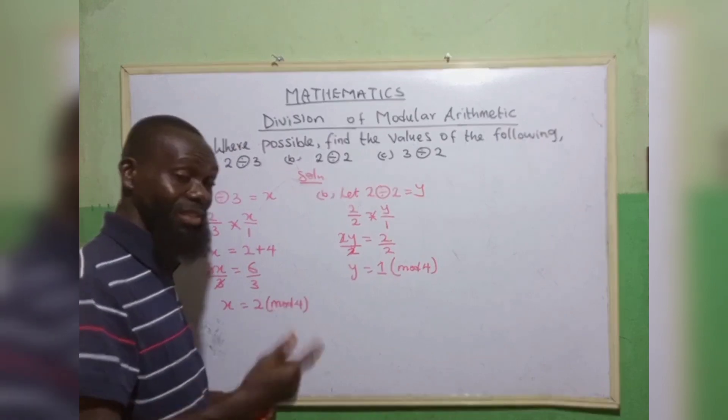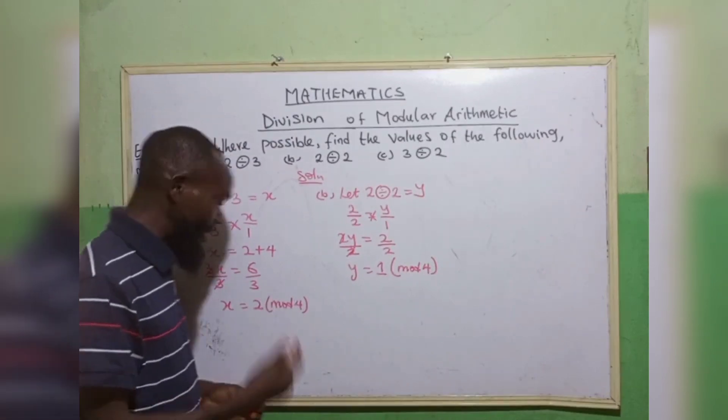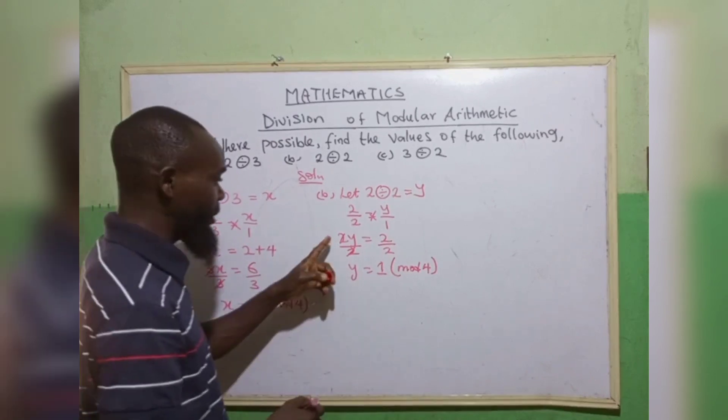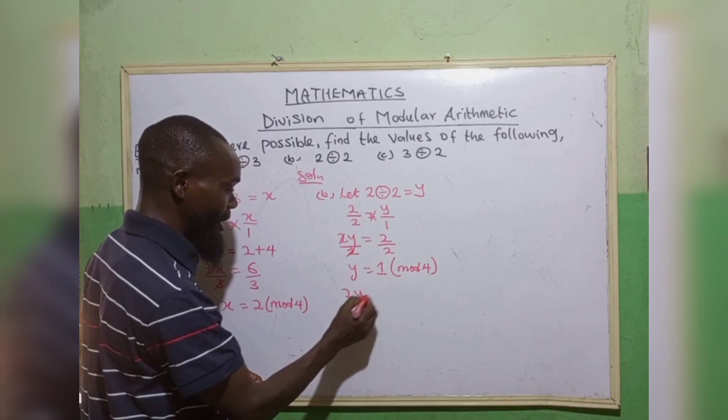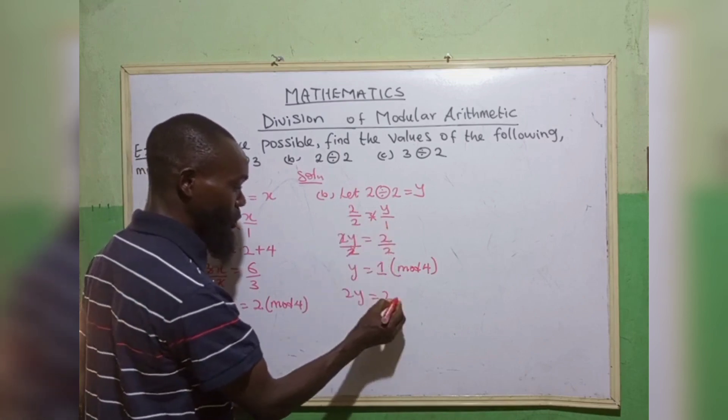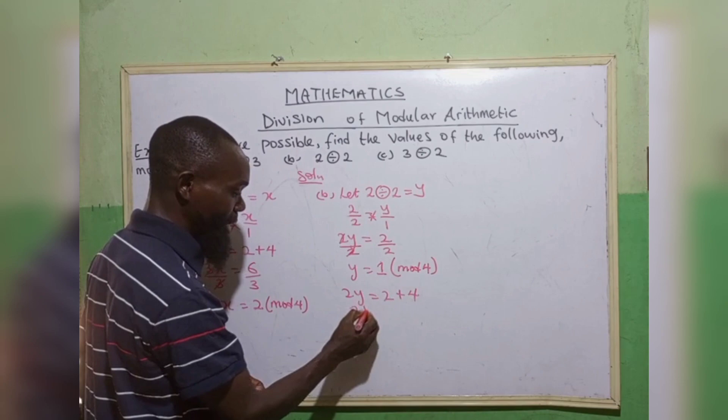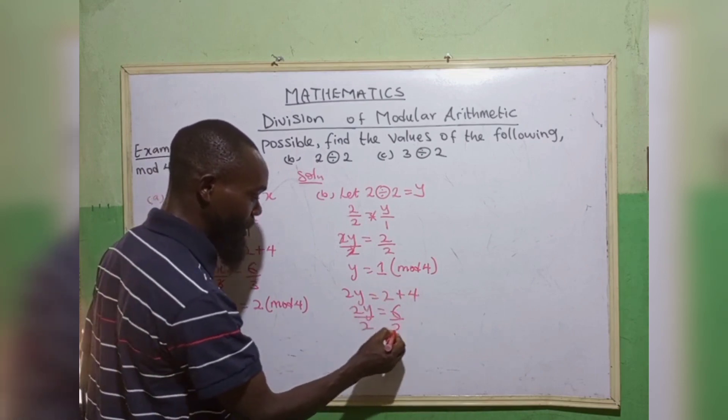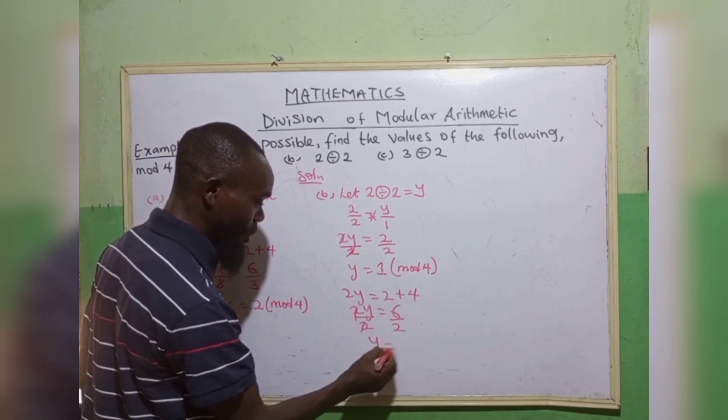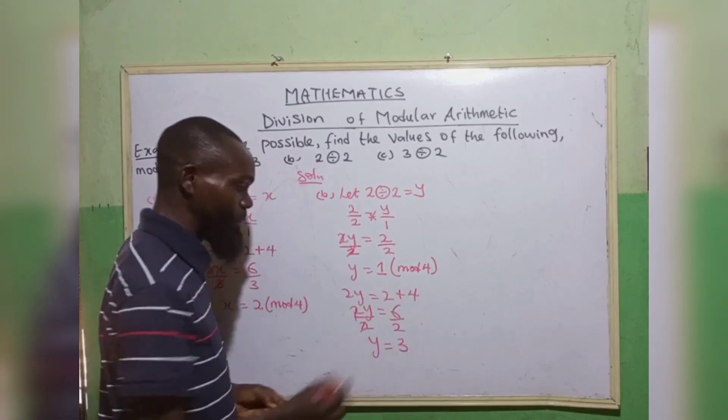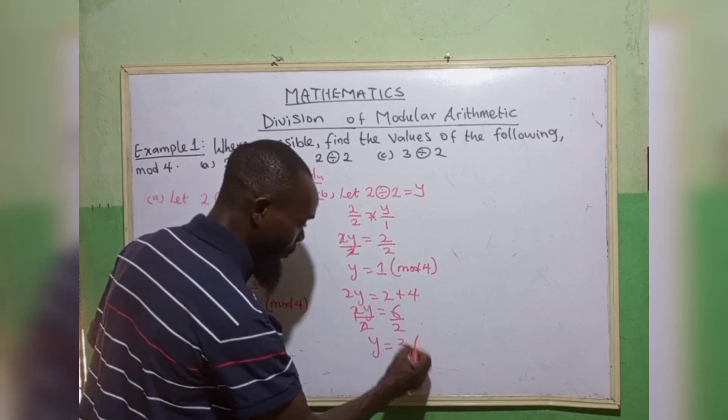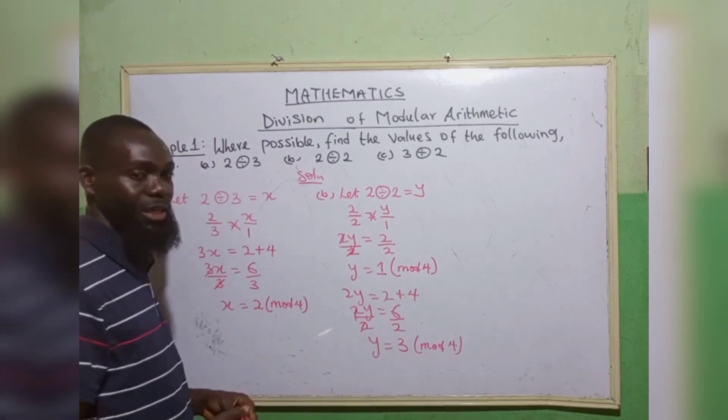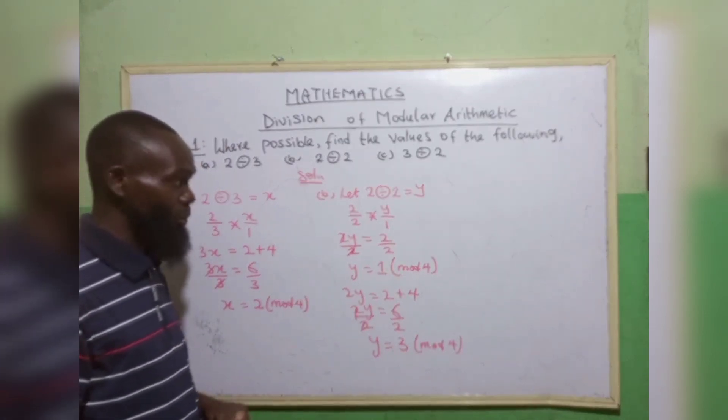Likewise, we can also get other answers for this. We can also add our modulo. From this fact, 2y equals to 2. We add modulo 4. So 2y equals to 2 plus 4, we have 6. So y equals to 2 goes in 6, we have 3. So the values of y are 1 and 3.